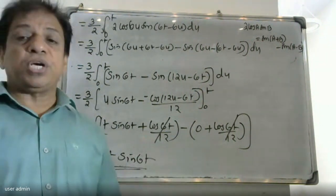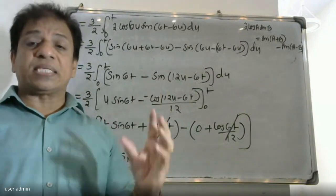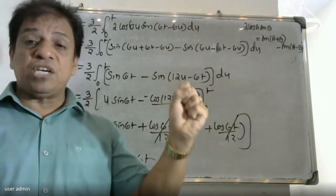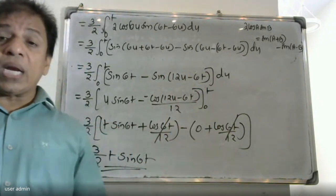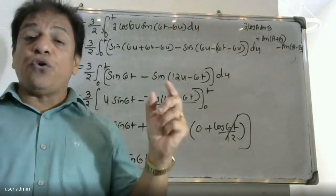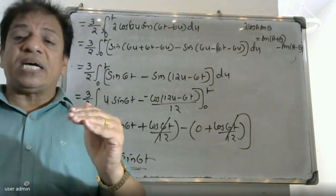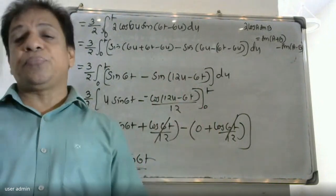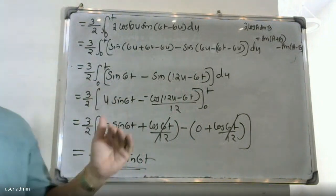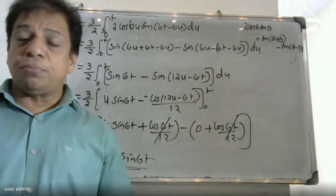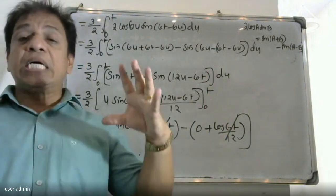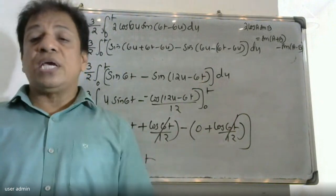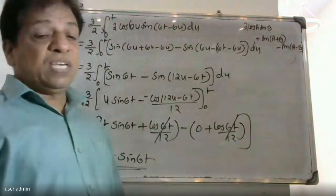Therefore, the inverse Laplace transform is 3/2 t sin 6t using the convolution property. The convolution property states that if L inverse of f bar s equals f(t) and L inverse of g bar s equals g(t), then L inverse of f bar s times g bar s equals integral 0 to t of f(u)g(t minus u)du. We applied the formula for 2 sin A sin B and the trigonometric identities to obtain the result.